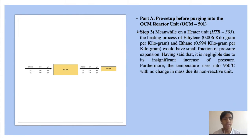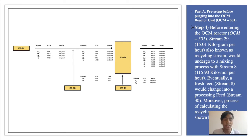On the heater unit, the heating process of ethylene and ethane would have a small fraction of pressure expansion. This is negligible due to its insignificant increase in pressure. The temperature rises to 950 degrees Celsius with no change in mass due to its non-reactive nature. Lastly, on Part A, before entering the OCM reactor unit, Stream 29, also known as the recycling stream, undergoes a mixing process with Stream 8. A fresh feed would change into a processing feed. The process of calculating the recycling stream is shown below.